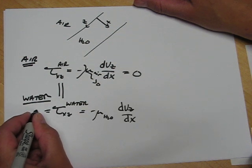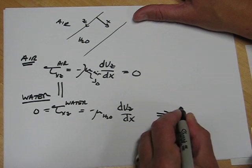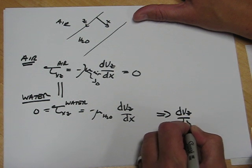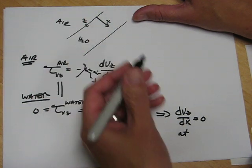And since the air one is zero, this must be zero. So our boundary condition is dvz dx equals zero at the surface, which is at x equals zero.